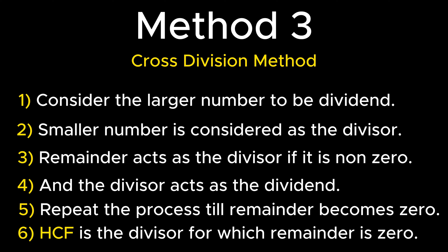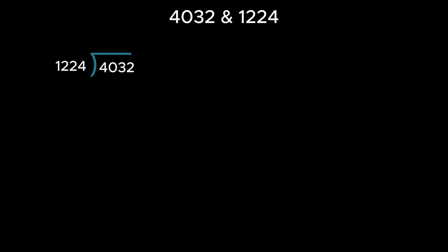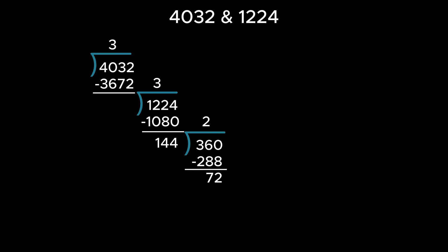Let's understand this method with an example. Consider 4032 and 1224 as the numbers whose HCF is to be determined. Since 4032 is greater than 1224, it acts as the dividend while 1224 acts as the divisor. On dividing, the remainder is not 0, so 360 becomes the new divisor and 1224 the new dividend. Again the remainder is not 0, so division is repeated with 360 as dividend and 144 as divisor. Since the remainder is still not 0, division is repeated with 144 as dividend and 72 as divisor. Since 72 divides 144 completely with remainder 0, the HCF of 4032 and 1224 is 72.